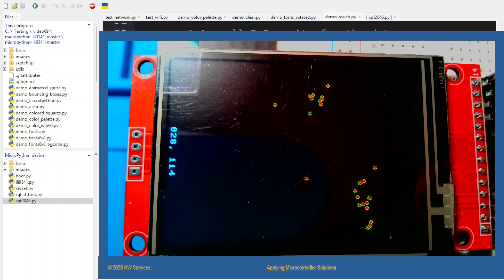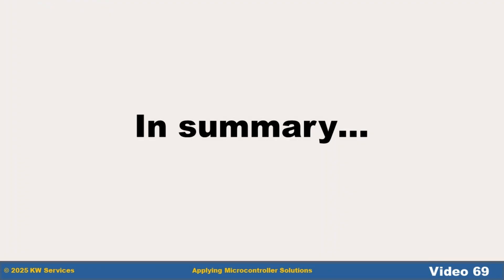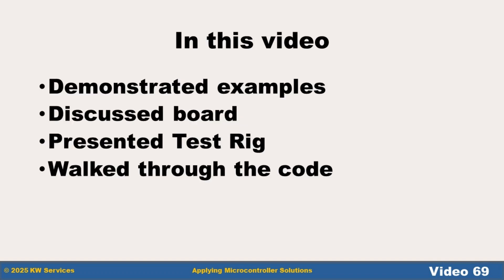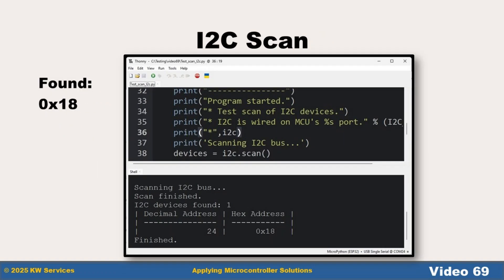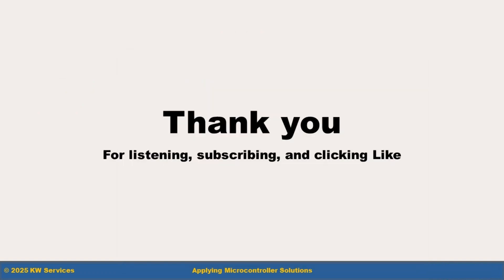In summary, in this video we demonstrated examples for each of our goals. We discussed the Waveshare board capabilities, presented our research, discussed the test rig wiring, and walked through the code. We also ran an I2C scan and found the address for the ES8311 codec device on the Waveshare board. Hopefully we can make another video about interfacing to the audio devices. We hope you found this discussion on MicroPython on the Waveshare P4 module dev kit helpful and can find a way to incorporate it into one of your efforts.